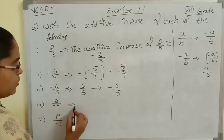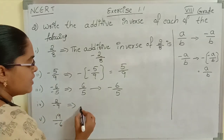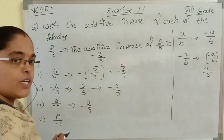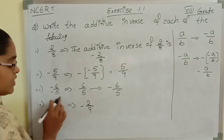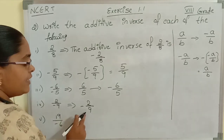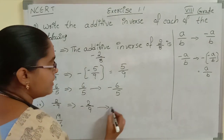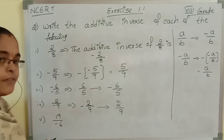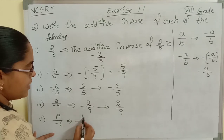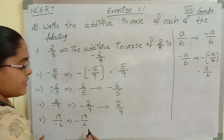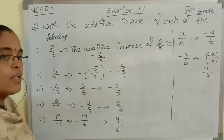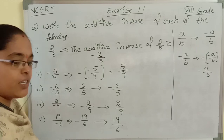Now see the next one: 2 by minus 9 is nothing but minus 2 by 9. Whether the numerator or the denominator has the negative sign, the total rational number has the negative sign. So the additive inverse of minus 2 by 9 is plus 2 by 9. Now the last one: 19 by minus 6, which is nothing but minus 19 by 6. Its additive inverse is plus 19 by 6.